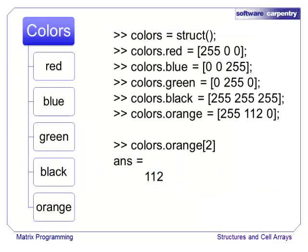Structures store data in a hierarchy. In this example, we store an array that contains the intensity values of the three primary colors—red, green, and blue—that are required to make one of several different colors. We can see that the array for orange is accessed by the key colors.orange.